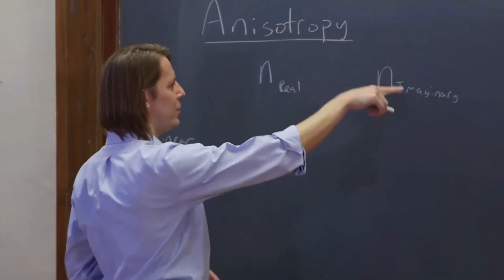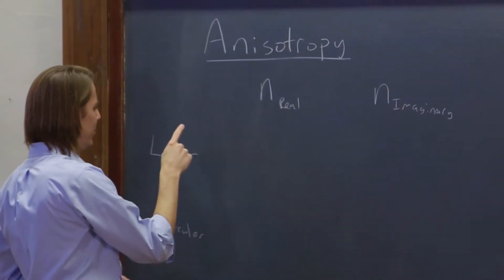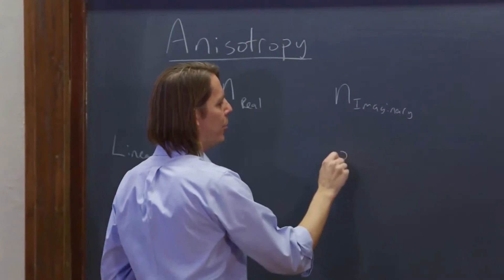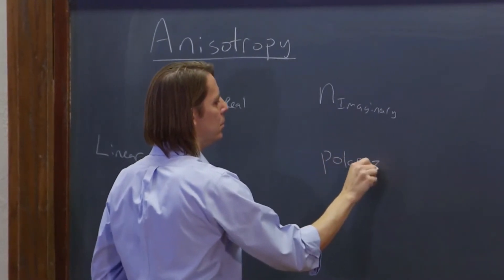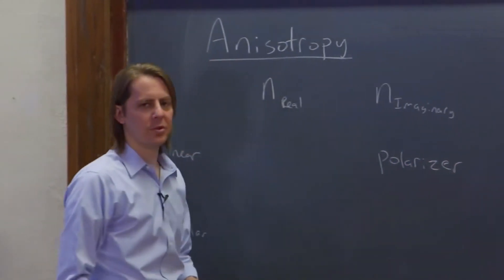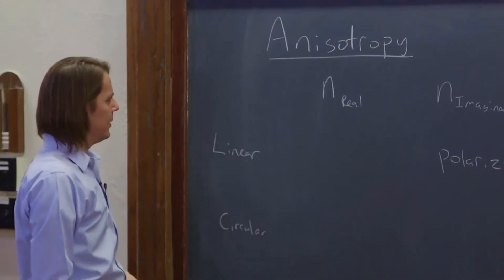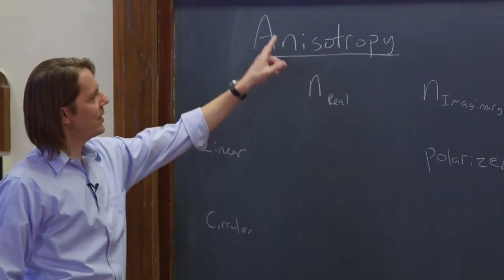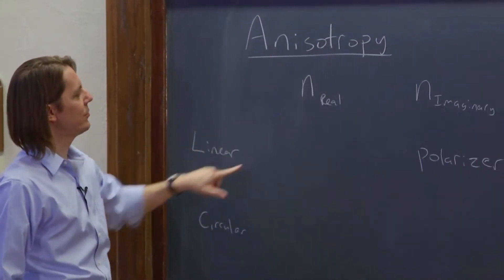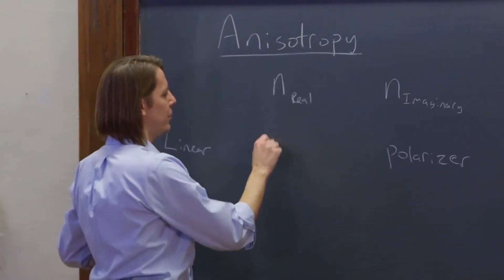When you had anisotropy in the imaginary part of the complex index for linear light, that was a polarizer. The effect we just called dichroism. And when you had a difference in anisotropy in the real part of the index for linear light, that was a phase retarder, and that's birefringence.